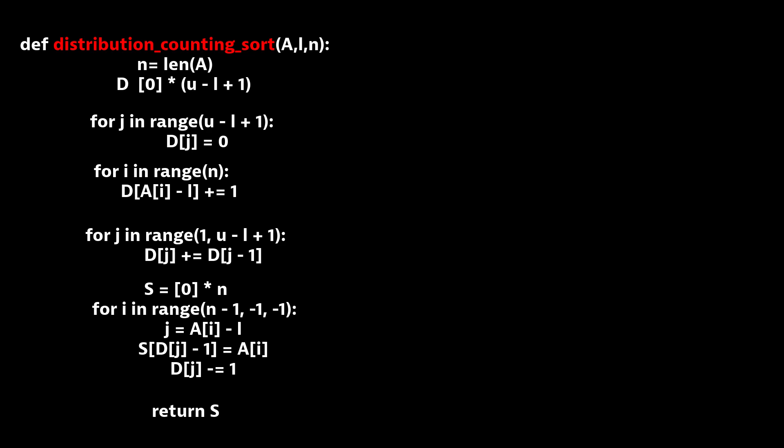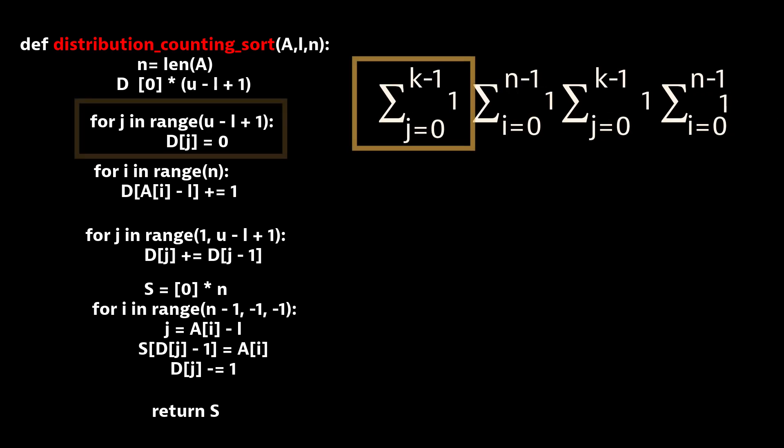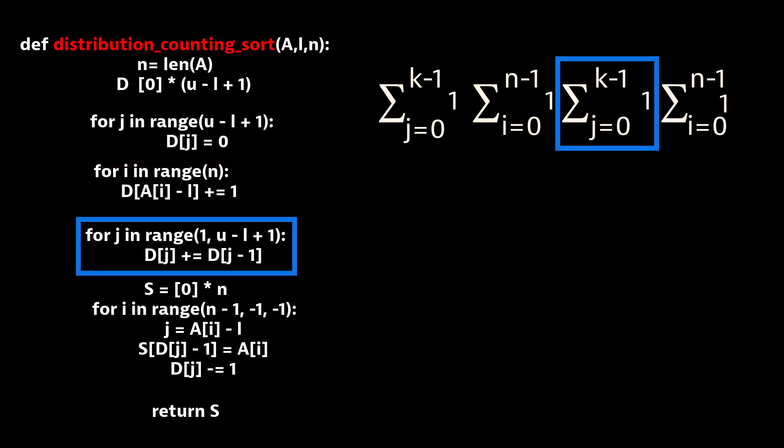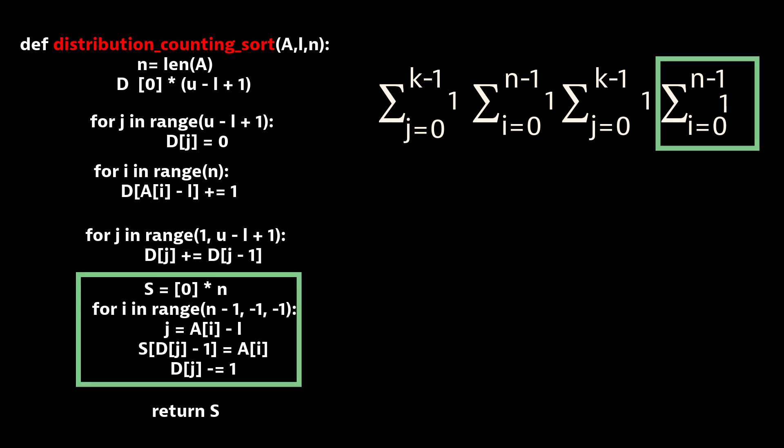Now let's analyze the code. As you can see here, we have four summations, one for each for loop, and we're going to use the formula upper minus lower bound plus one to indicate our time complexity.